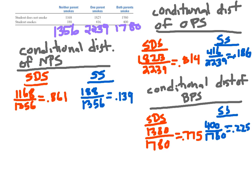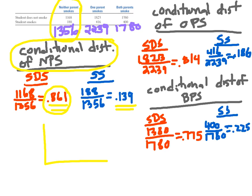You can do the exact same thing for the other variable. Here I've done the conditional distribution not for the first row but for the first column — this is the conditional distribution of families in which neither parent smokes. This number means 86.1 percent of students in families where neither parent smokes do not smoke. This number means within families where neither parent smokes, 13.9 percent of students do smoke.